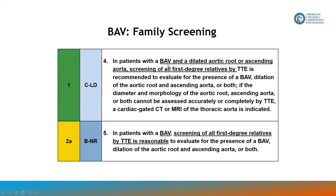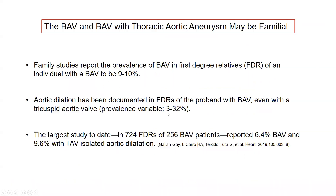In individuals with a bicuspid valve and a dilated aortic root or ascending aorta, a class 1 recommendation is given to screen all first-degree relatives by echocardiogram to evaluate for bicuspid valve and to evaluate the aorta. Importantly, if the ascending aorta is not adequately visualized on echocardiogram in these families, CT or MRI is indicated to look for familial aneurysm disease.